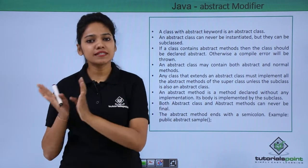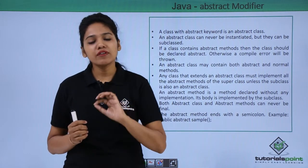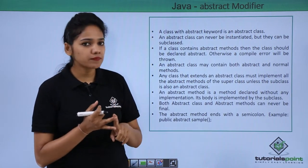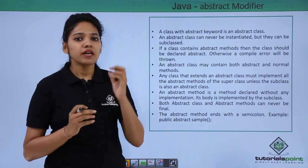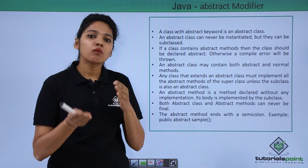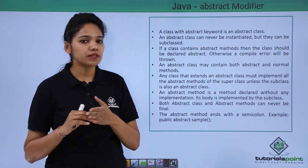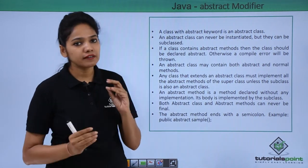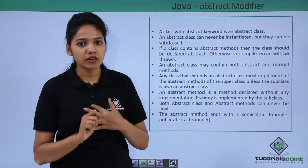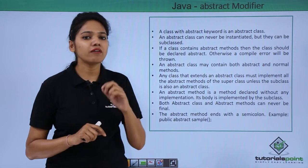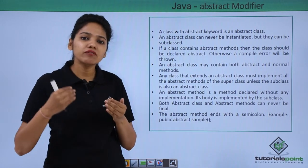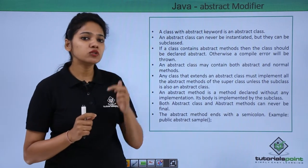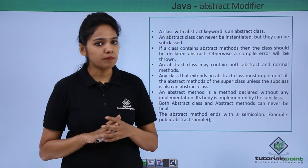We need to understand abstract and non-abstract methods and which kinds of classes can hold each of them. An abstract class can hold both abstract methods and non-abstract methods. Non-abstract methods are normal methods, while abstract methods are those not defined in detail — only an outline is provided. A normal class cannot have an abstract method; if you want to define a class with an abstract method, you must make that class abstract, otherwise you will receive a compile-time error.